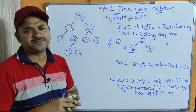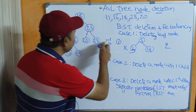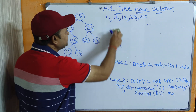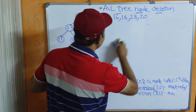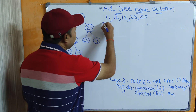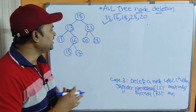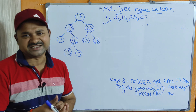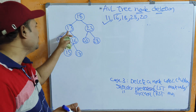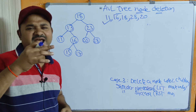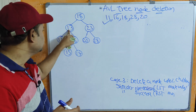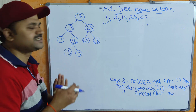Now we have an AVL tree, and our aim is to delete nodes 11, 16, 18, 28, and 20. First let us delete node 11. To find node 11, compare it with 18 — 11 is less than 18, so move left. Then compare with 13 — 11 is less than 13. Then compare with 11 — same. So now delete the node. Here 11 is a leaf node, so we can directly perform the deletion without making any changes.